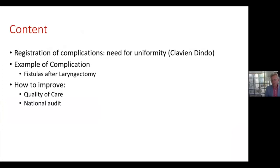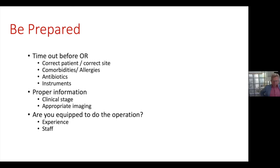What I'm going to talk about is first a few general things about complications and the need for uniformity. I'll mention the Clavien-Dindo classification, which in general surgery is now the most commonly used classification system. I'll focus on a few complications after laryngectomy that I published on, and then I will end on how to improve our quality and a little bit on our national audits.